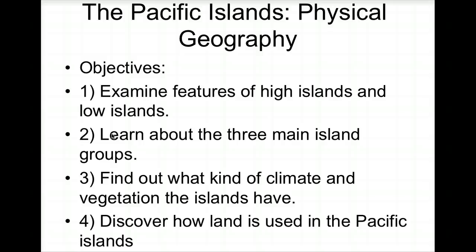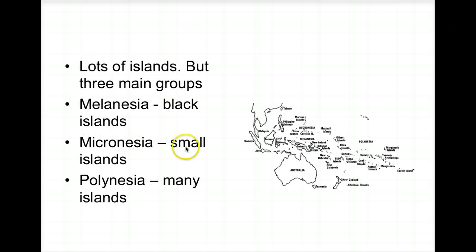The last section covers Pacific Islands physical geography. We'll examine features of high and low islands, learn about the three main island groups — Melanesia, Micronesia, and Polynesia — find out about their climate and vegetation, and discover how land is used. Melanesia means 'black islands,' Micronesia means 'small islands,' and Polynesia means 'many islands.'